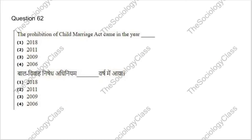Question 62: The Prohibition of Child Marriage Act came in the year — 2018, 2011, 2009, or 2006? The correct answer is D — 2006.